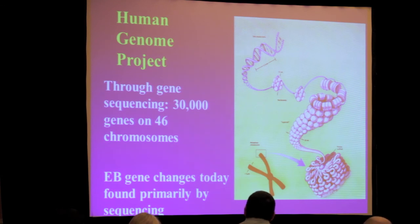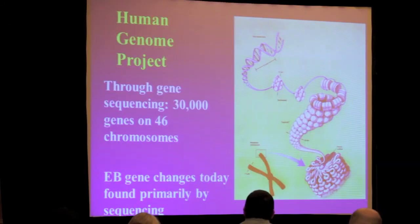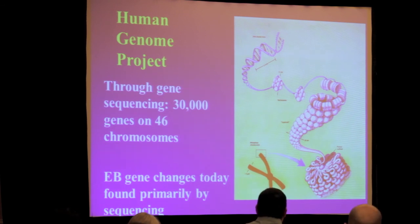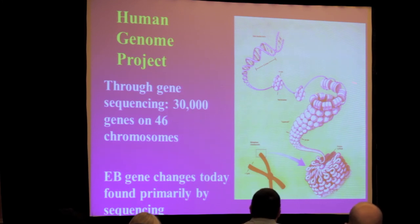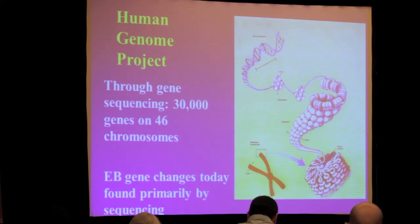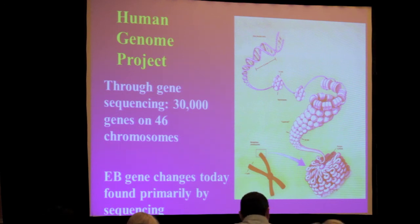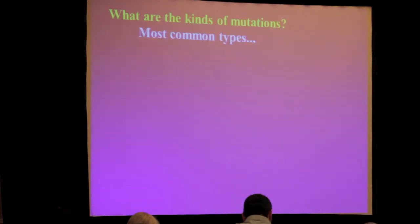I want to mention the Human Genome Project. About 10 years ago, gene sequencing enabled us to find 30,000 genes on our 46 chromosomes — actually, many fewer genes than we thought existed. You can see what we just talked about, with DNA basically forming genes that make up our chromosomes. When we talk about EB genetic changes, we find them primarily by sequencing — figuring out the sequence of these various DNA bases and checking it against what we know to be the normal sequence.